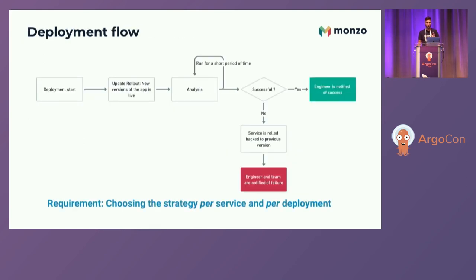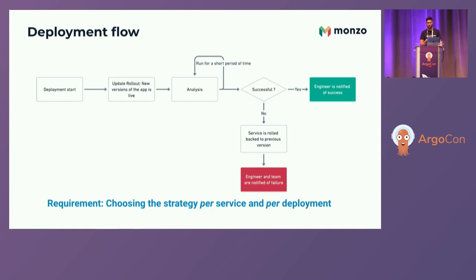This is what the deployment workflow looks like in the new world. An engineer starts a deployment that updates the rollout object. The new version of the app goes live. Then for a short period there is an analysis step where rollback rules are evaluated. If successful, the engineer is notified of success via Slack. If one rule evaluates to false, we automatically roll back to the previous version and notify the engineer and the team.